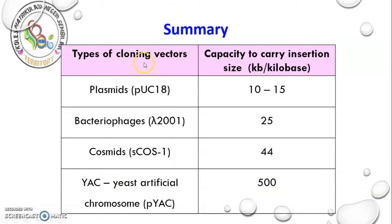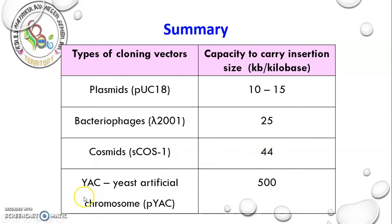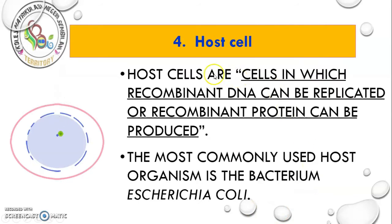To summarize, there are four types of cloning vector. Plasmid — for example pUC18 — can carry around 10 to 15 kilobases. Bacteriophage — for example lambda 2001 — can carry 25 kilobases. Cosmid can carry 44 kilobases. And YAC — yeast artificial chromosome, or pYAC — can carry the largest, which is 500 kilobases.